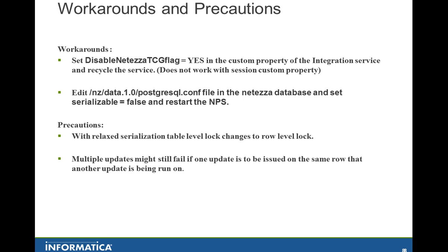With the relaxed isolation level, there will be no table-level lock. If you have multiple updates, it won't prevent you from firing multiple updates unless one update is going to modify a row already being modified by another. Previously, one update followed by another would fail with a serialization error. Now it allows the update but uses a row-level lock instead of a table-level lock. A similar situation occurs with a WHERE clause in an update — it locks a range of rows, and if another update targets that same range, you will encounter issues again.